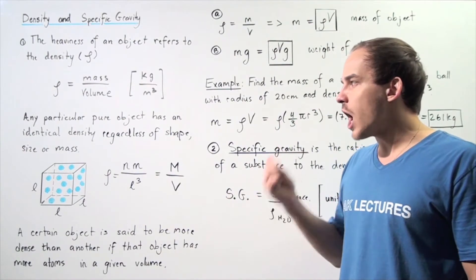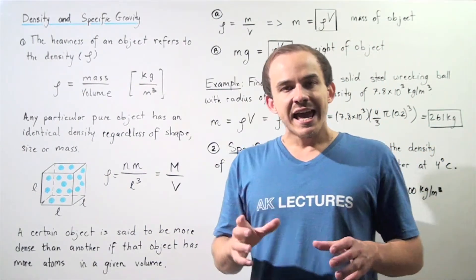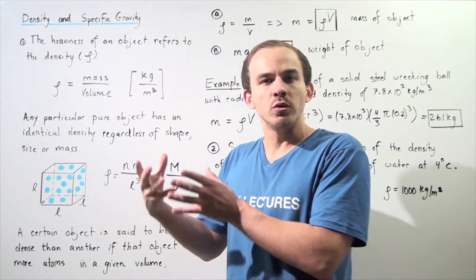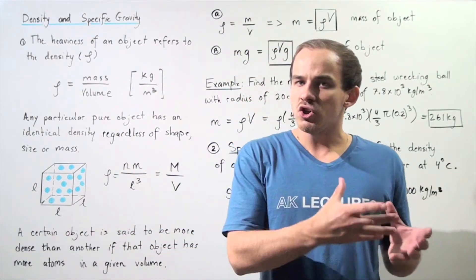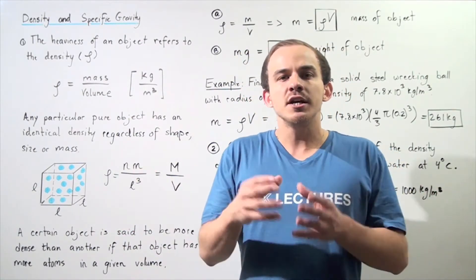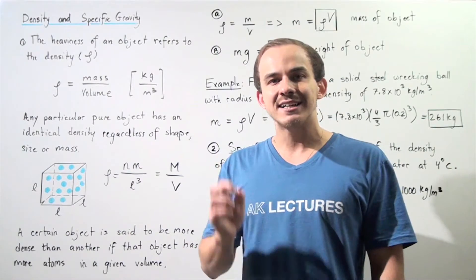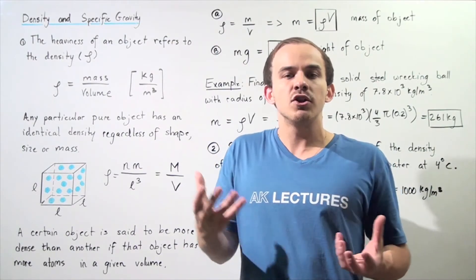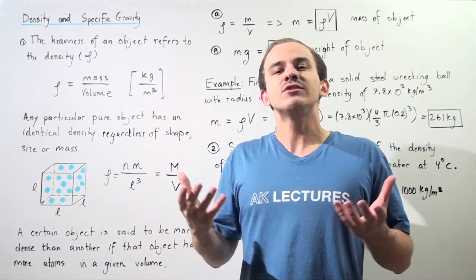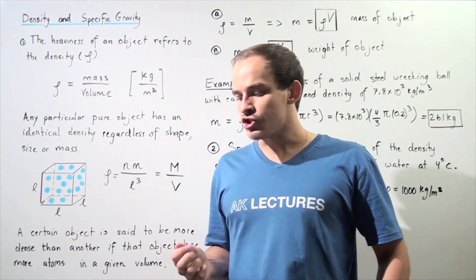For example, if our pure object is pure gold, if we take a very large gold nugget and a very small gold nugget, the two nuggets will have the same exact density regardless of the quantity of gold we are considering.